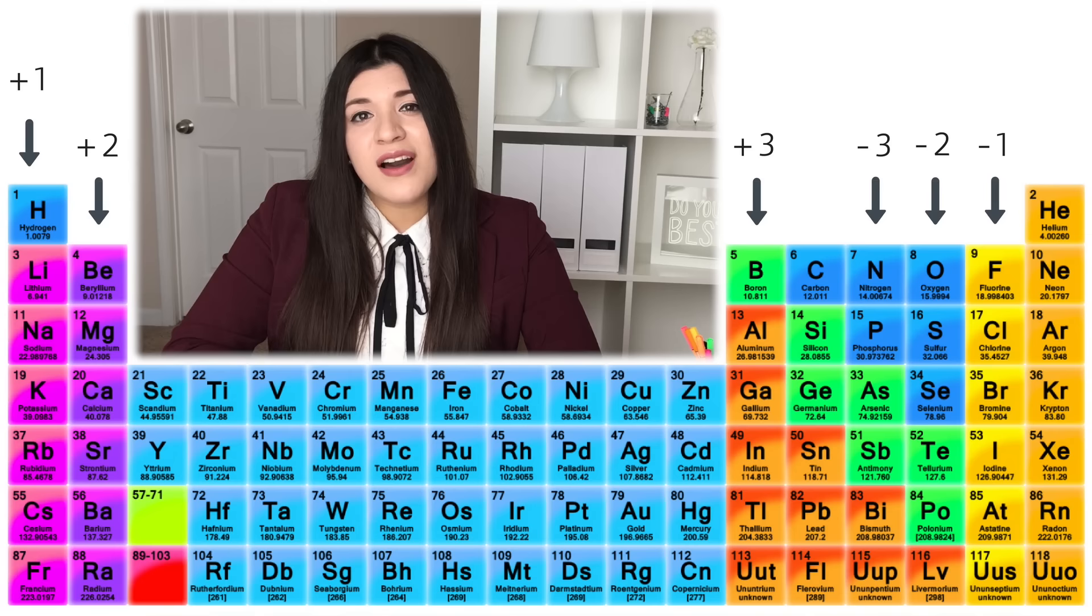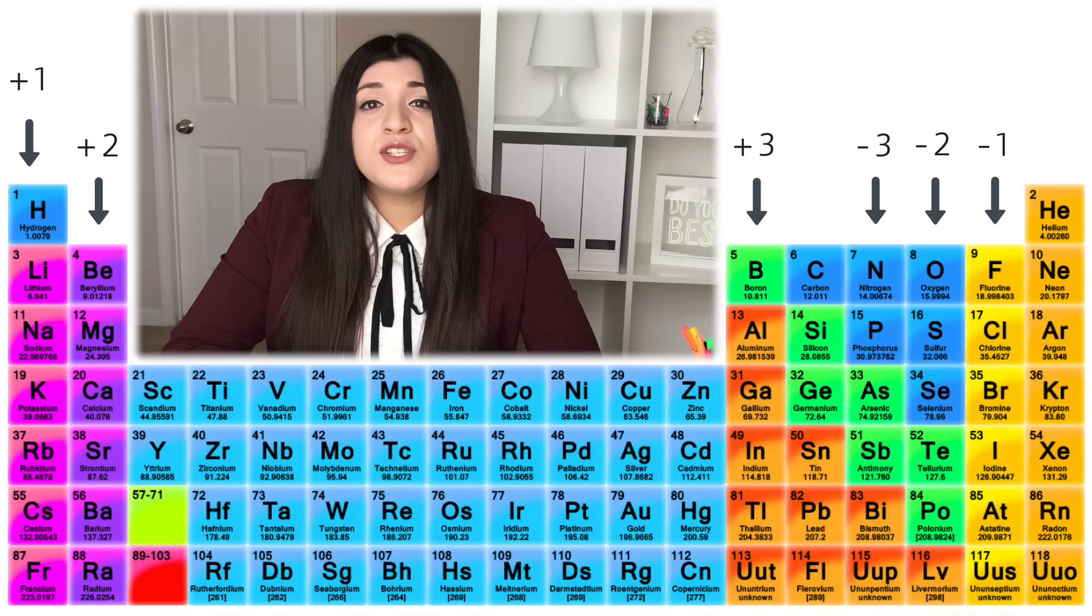For this example, aluminum oxide, let's identify the charges for aluminum and oxygen. Aluminum's charge is a 3+ charge, and oxygen has a 2- charge.